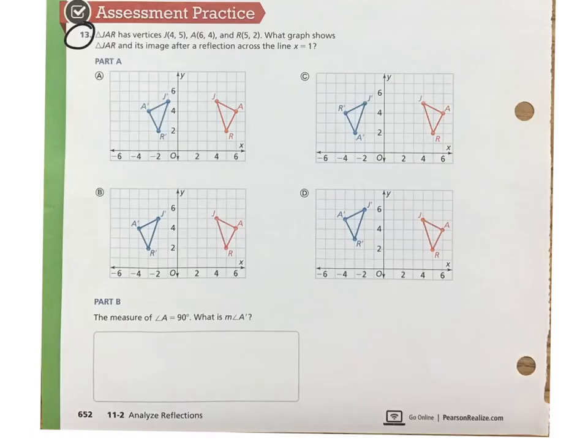And last, we have question 13. First, we need to be able to find the line X equals 1. Once you have identified the line X equals 1 on each graph, look for which one shows the points J and J prime, or R and R prime, an equal distance from that line X equals 1. That's going to give us our reflection.